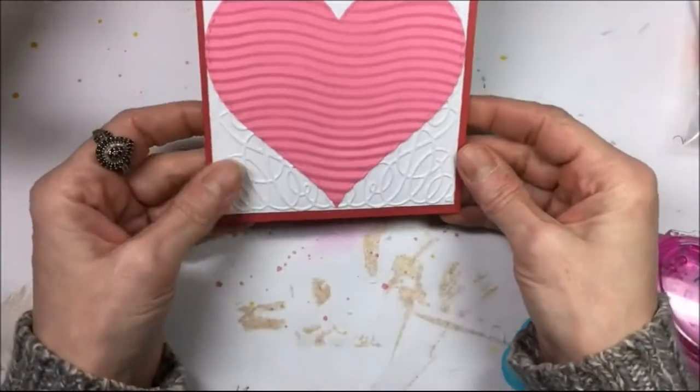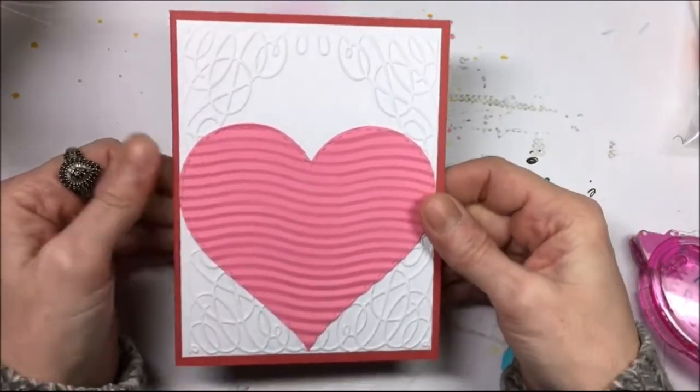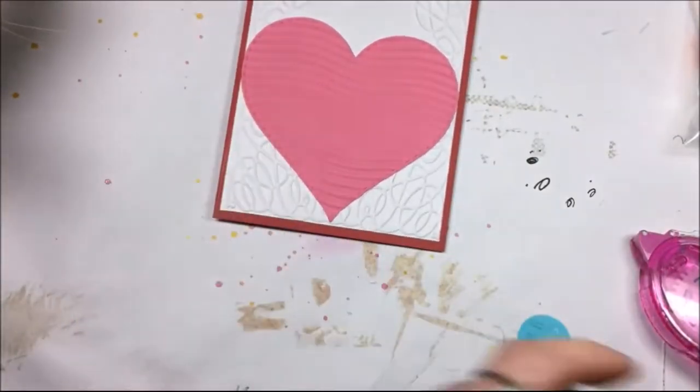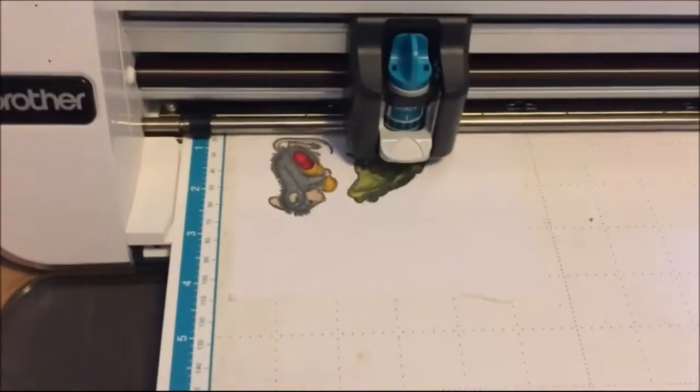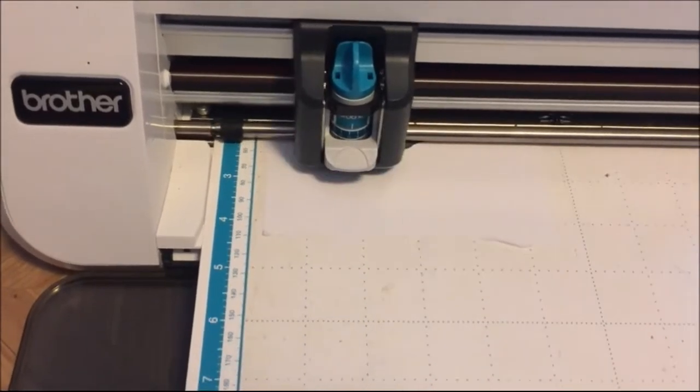I put that embossed background on there and I'll put the heart where I want it. I'm just using some Tombow adhesive dots, it's my favorite glue to use. Once I get that where I want it, I am going to cut out the toad and the mouse on my Scan and Cut.